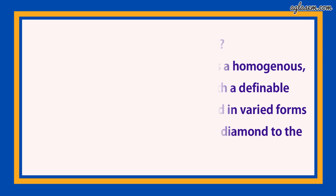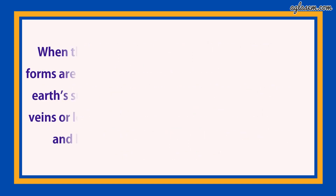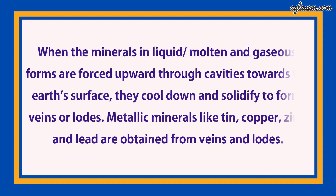The third question asks how minerals are formed in igneous and metamorphic rocks. In igneous and metamorphic rocks, minerals may occur in the cracks, faults, or joints. The smaller deposits are called veins and the larger ones are called lodes. When minerals in liquid, molten, or gaseous forms are forced upward through cavities towards the earth's surface, they cool down and solidify to form veins or lodes. Metallic minerals like tin, copper, zinc, and lead are obtained from veins and lodes.